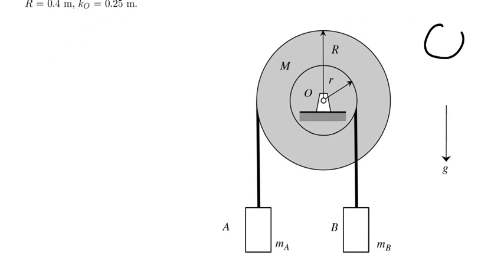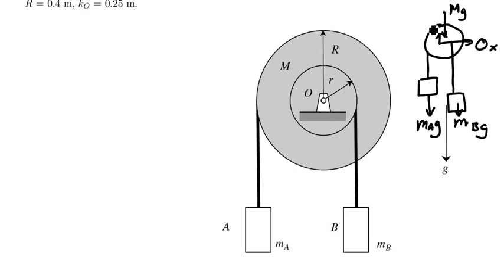We're going to draw a free body diagram up here, and we're going to do this for the system. We want to make our system as big as possible when we're using the work energy equation. We're going to have forces on this of M_A times G, we're going to have forces of M_B times G acting down. We'll have the weight of the big pulley, which will be M times G. We'll have reactions at the center here, which will be O_X and O_Y, and I think that should be just about it.